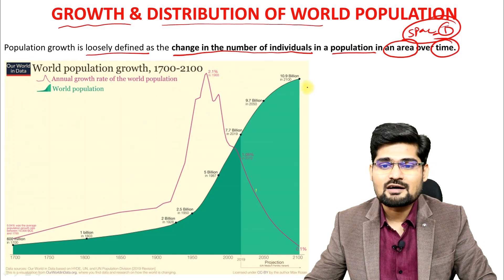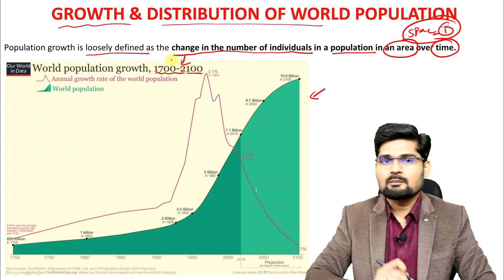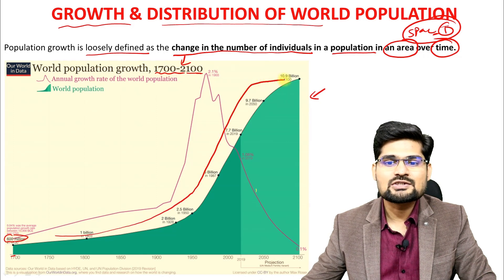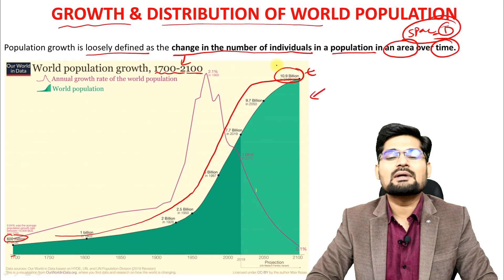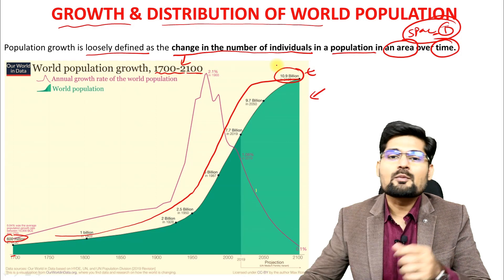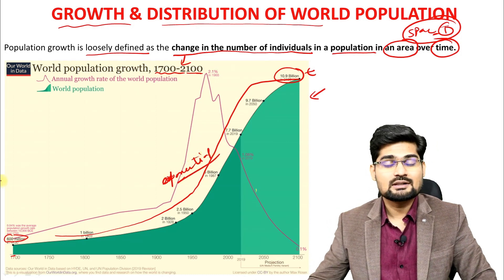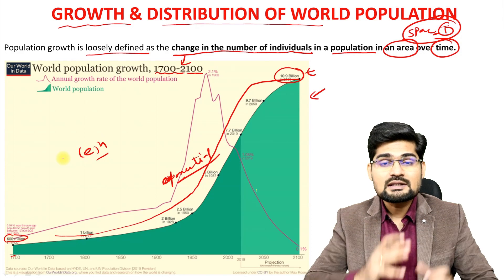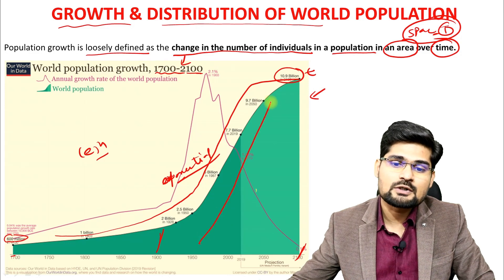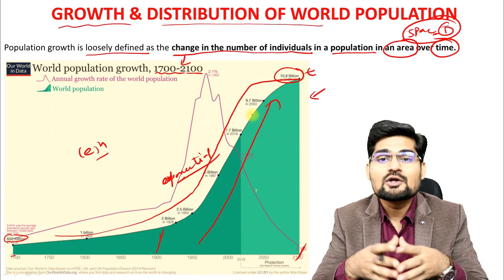If you observe this particular graph of the world population growth from 1700 to 2100, about the 17th century the population is 600 million and the estimation is that it goes to 10.9 billion by the end of this 21st century. The population projection shows exponential growth — e to the power n — and from almost the 19th century, population has grown multifolds. We'll discuss the reasons in today's session.